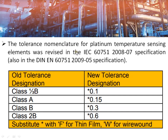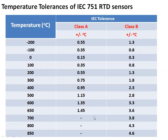The tolerance nomenclature for RTD temperature sensing elements was revised in later versions, that is IEC 60751-2008 and later. The old tolerance class 1/3 B was replaced by a new designation where the asterisk indicates either F or W — F stands for thin film and W stands for wire wound type RTD. For thin film type RTD, the new designation for Class 1/3 B is F0.1, for Class A it is F0.15, for Class B it is F0.3, and for Class 2B it is F0.6.